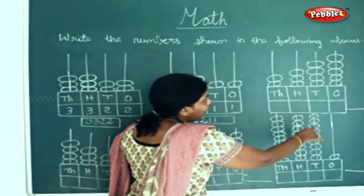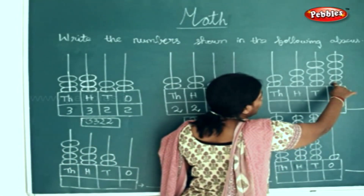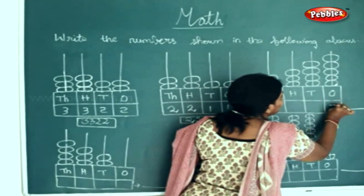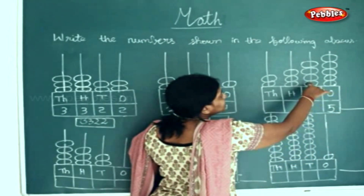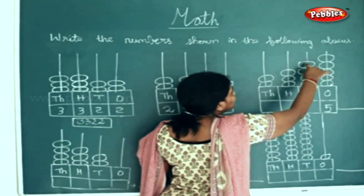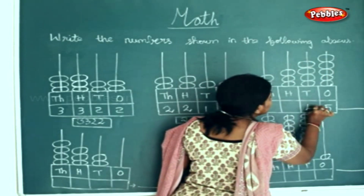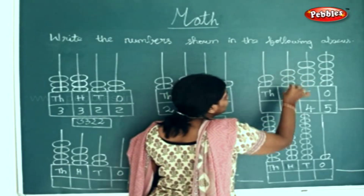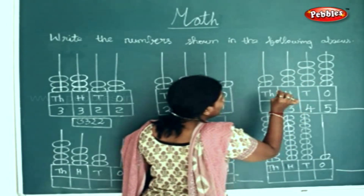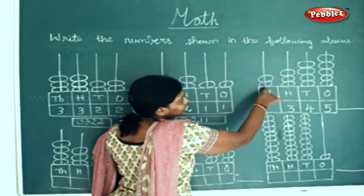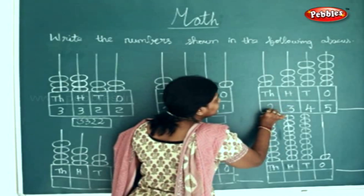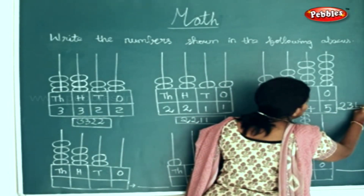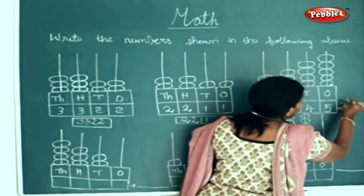Here in the next sum. How many beads in the ones place? One, two, three, four, five — so we'll write five here. How many beads in the tens place? One, two, three, four beads in the tens place. How many beads in the hundreds place? One, two, three beads — so we'll write three here. How many beads in the thousands place? Two beads. So we'll write two thousand three hundred and forty five.